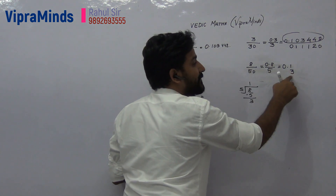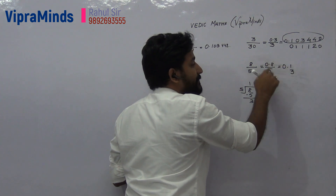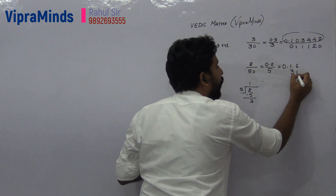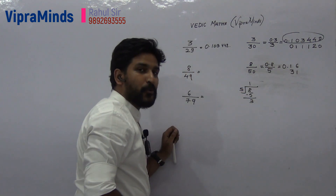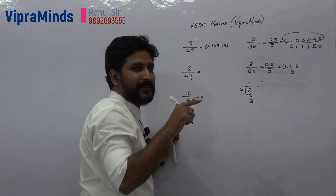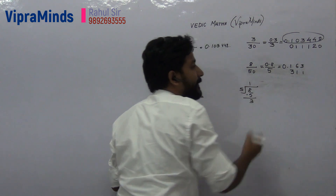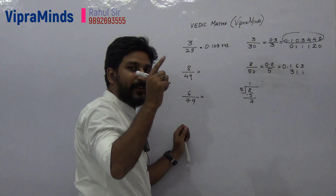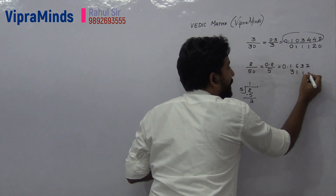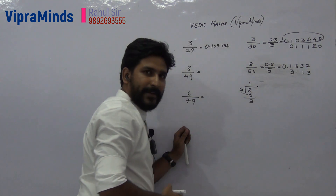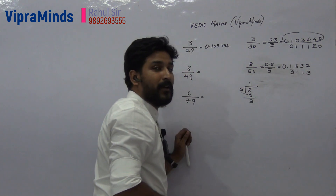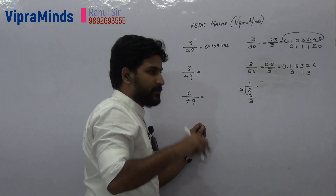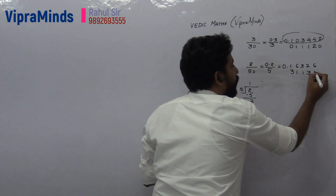Next number is 31: 5 into 6 is 30, remainder is 1. Next number is 16: 5 into 3 is 15, remainder is 1. Next number is 13: 5 into 2 is 10, remainder is 3. Next number is 32: 5 into 6 is 30, remainder is 2. Just keep on doing this.